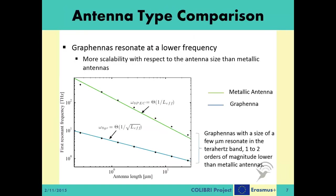Graphennas resonate at a lower frequency than their metallic counterparts. In metallic antennas, the resonance frequency, or radiation frequency, increases inversely with the size of the antenna. On the other hand, in graphennas, this frequency increases inversely with the square root of the size of the antenna. Consequently, graphennas with a size of a few micrometers resonate in the terahertz band, one to two orders of magnitude lower than metallic antennas.